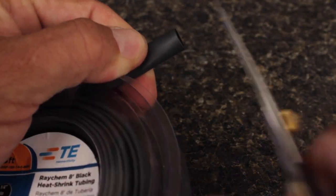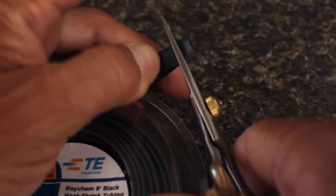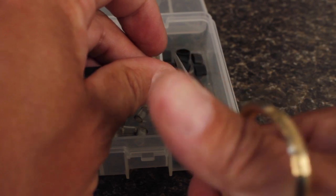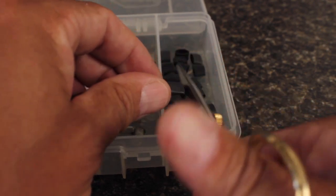We'll cut the heat shrink tubing next. About a quarter-inch will do. I usually snip a whole bunch into a waiting container.